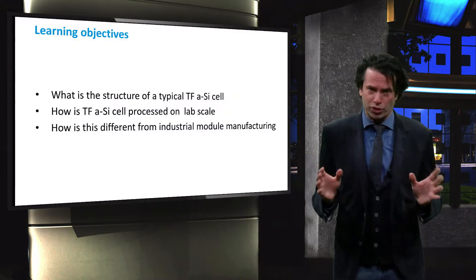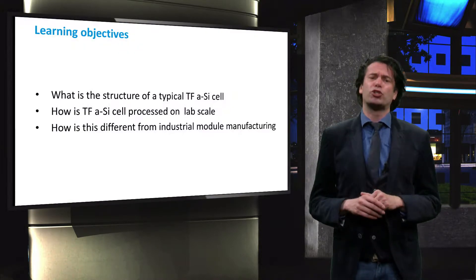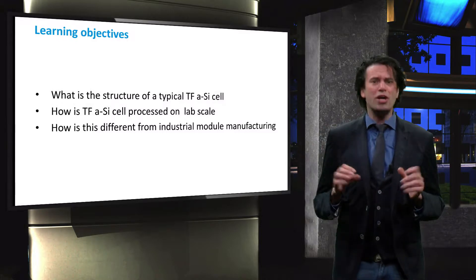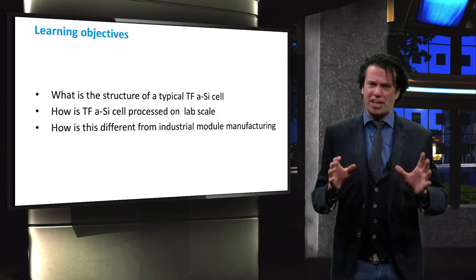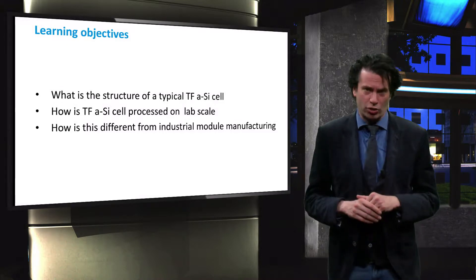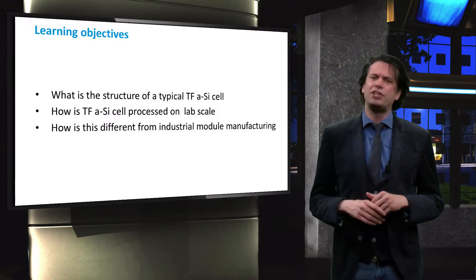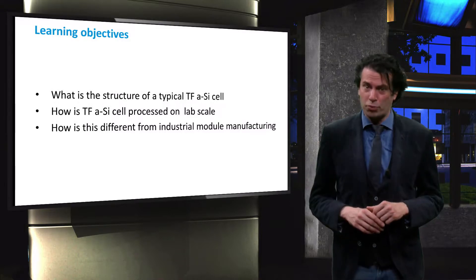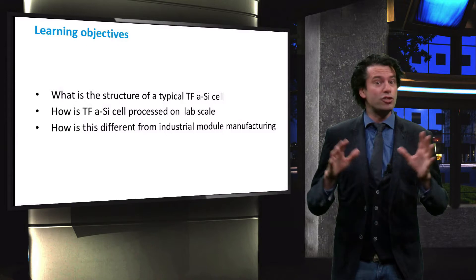To discuss the production process, we will look at a typical structure of a thin film amorphous silicon solar cell. We will then look at processes involved in fabrication of such a solar cell on lab scale. In the next video we will learn about how these processes differ from the module production processes on an industrial scale.